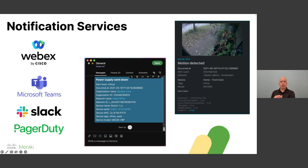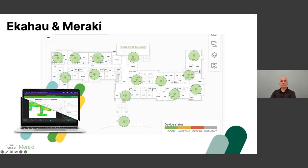Going back to the poll question — Jordan, what were the results? The question was: 'How do you place Meraki APs on floor plans?' 71% of respondents said they manually place it in a general location, 14% said they are much more precise, and 14% said 'What the heck are floor plans?'